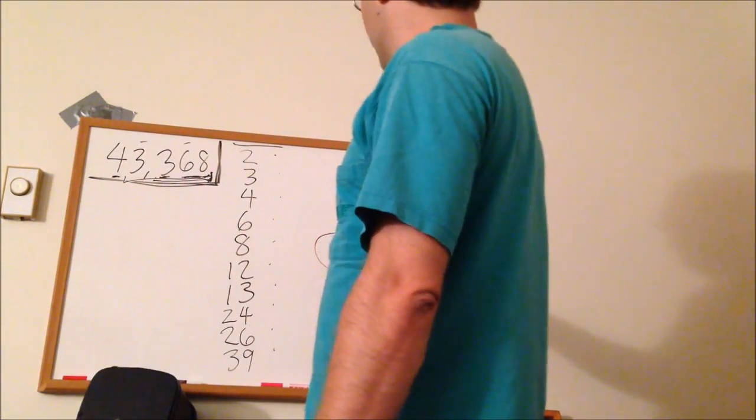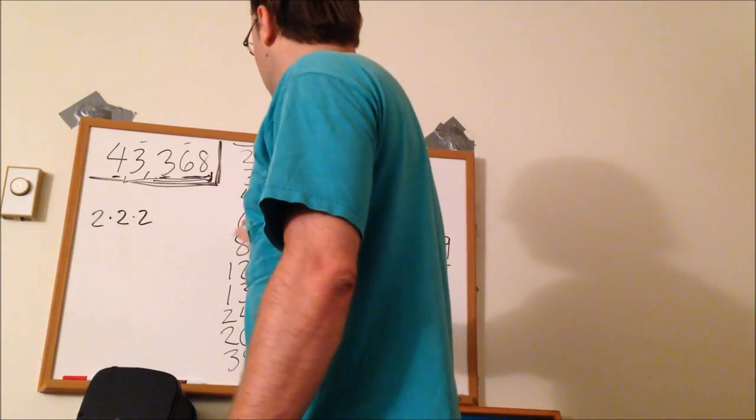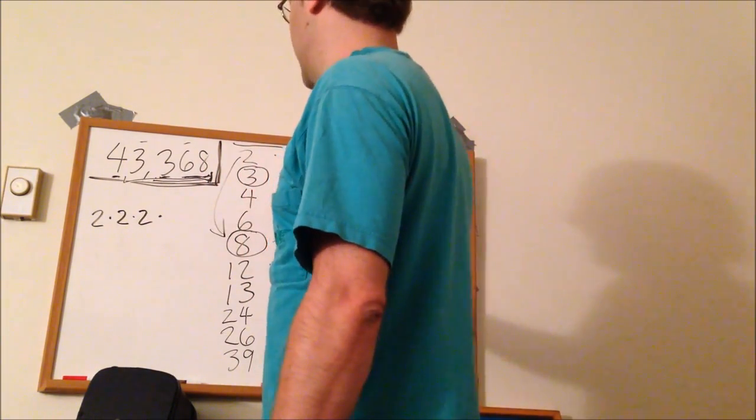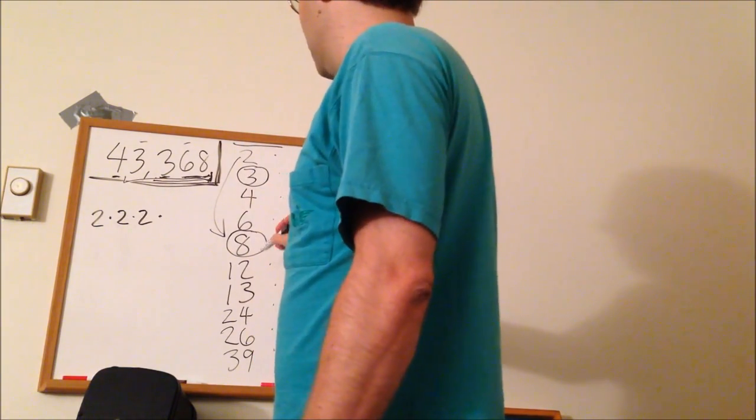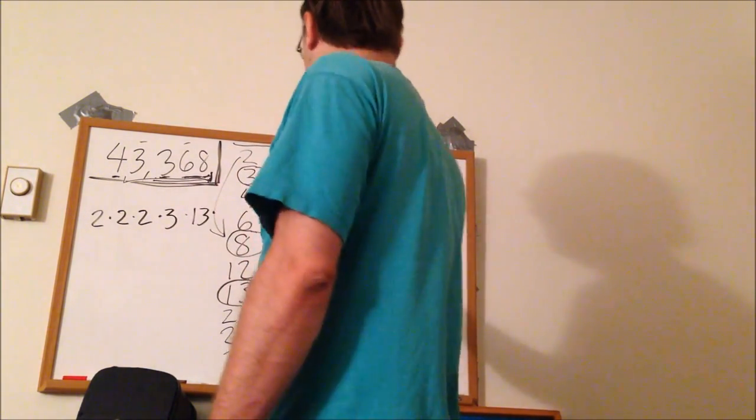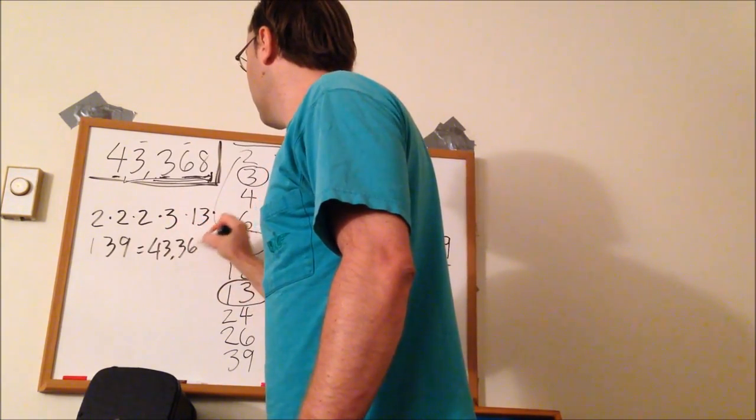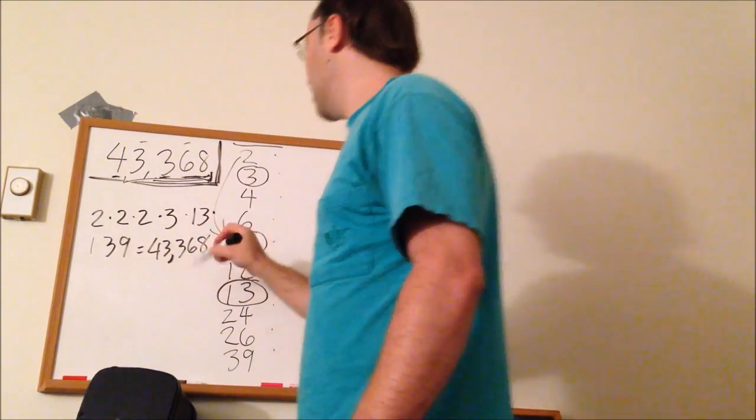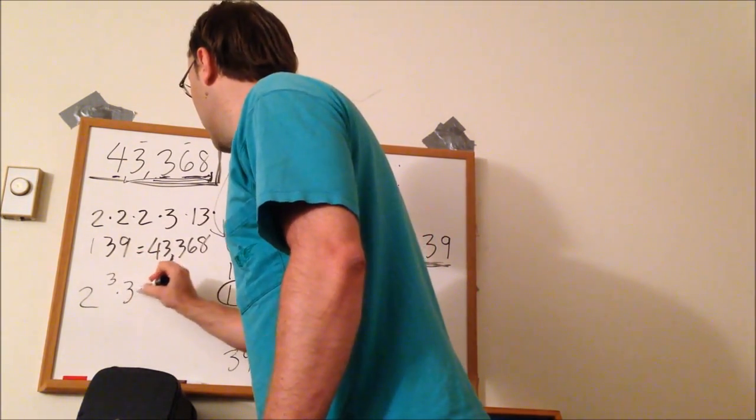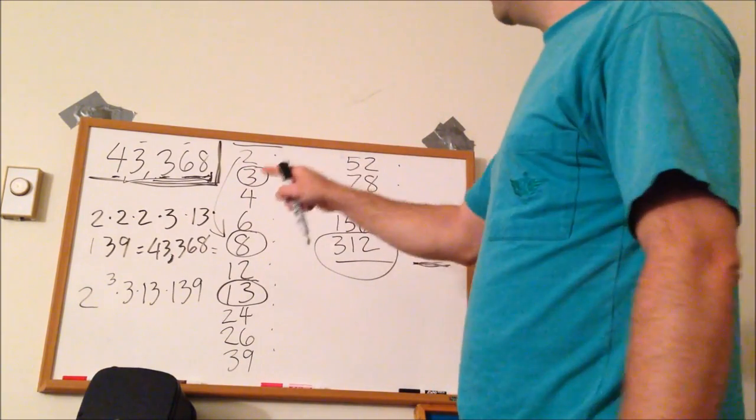Which would be 2 times 2 times 2, because we have divisibility up to 8. And then we have 3. And, of course, 2 is the prime factor that leads to that 8. But 4 and 6 are not prime. Nor is 12. Let's include 3. And then 13. And then that's times 139 is also prime.